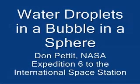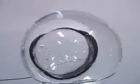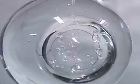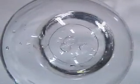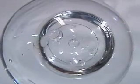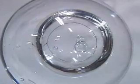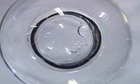Water droplets in a bubble in a sphere. Here we have a sphere of water 75 millimeters in diameter with an air bubble inside about 35 millimeters in diameter, and we inject water droplets anywhere from one to eight millimeters in diameter into the bubble and look at the resulting collision dynamics where they collide with each other and the walls. Most of the collisions result in an elastic collision, but every once in a while a collision will result in a mass transfer across the interface, and this mass transfer has a momentum exchange associated with it which will propel the droplets.